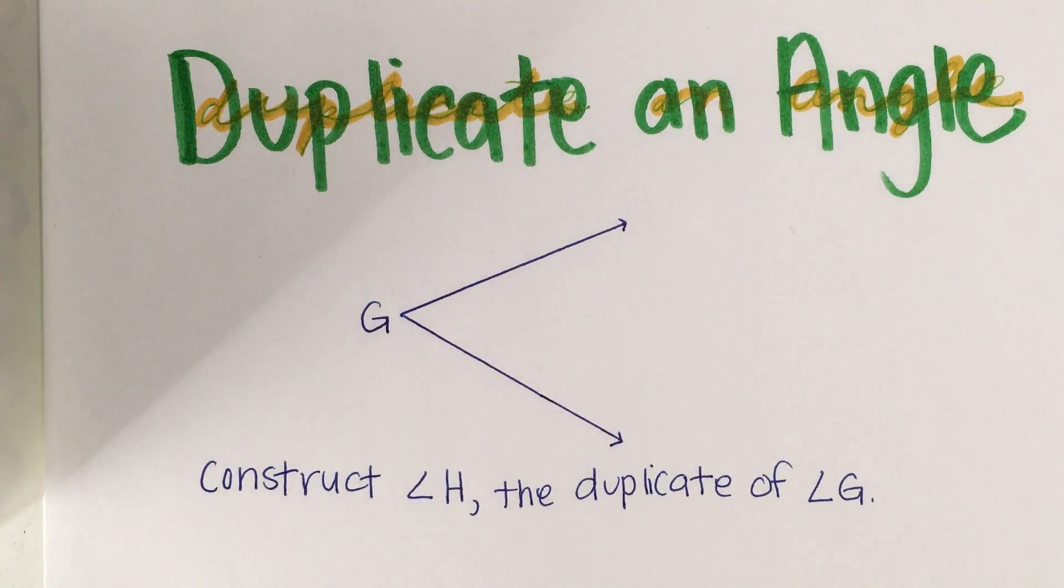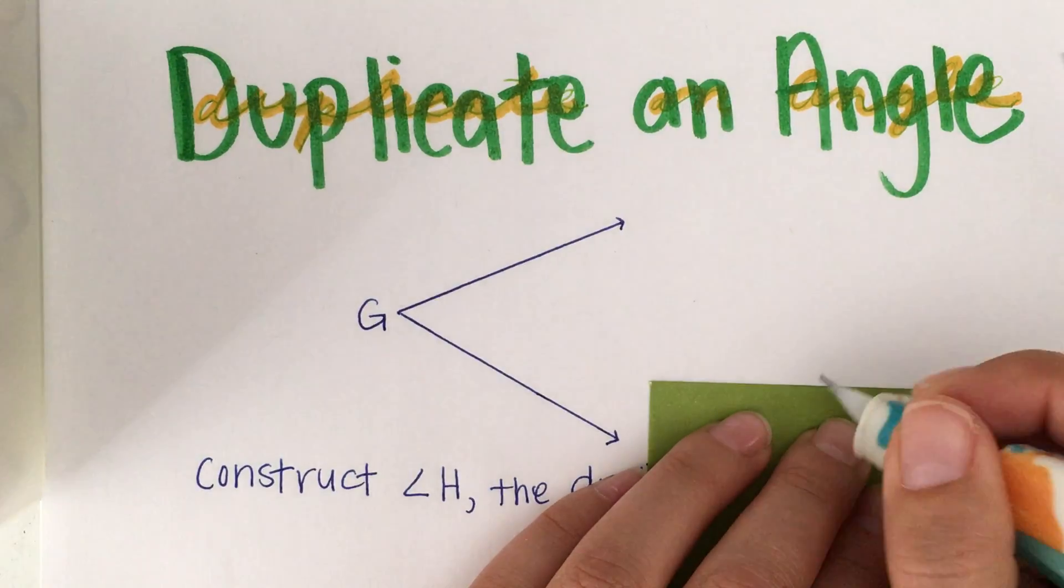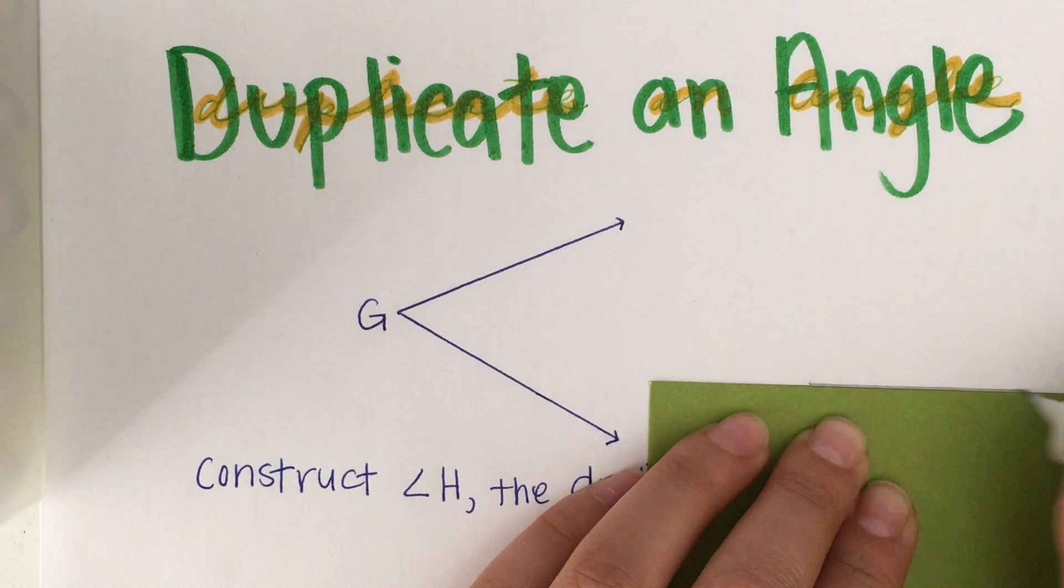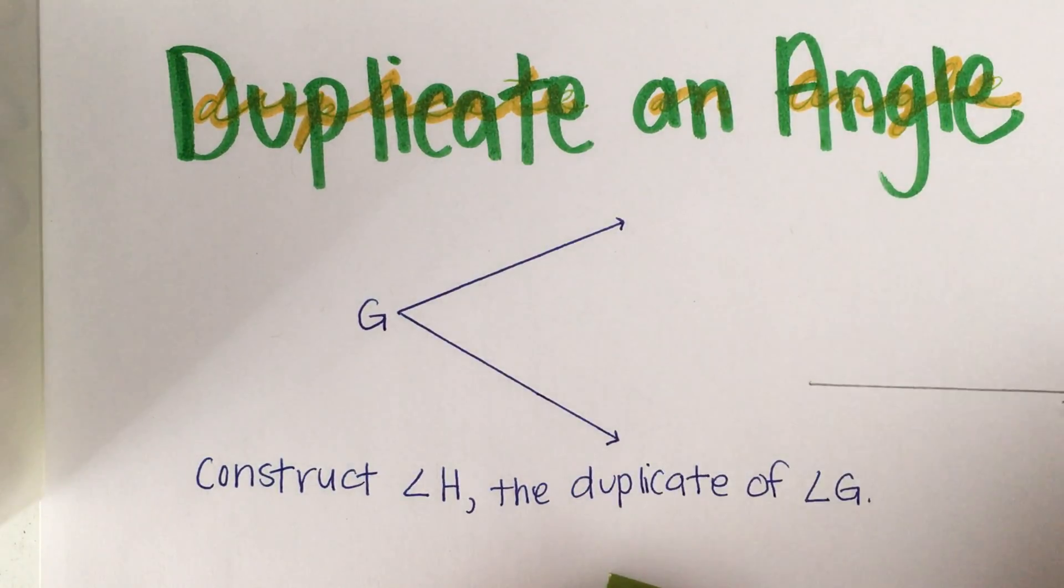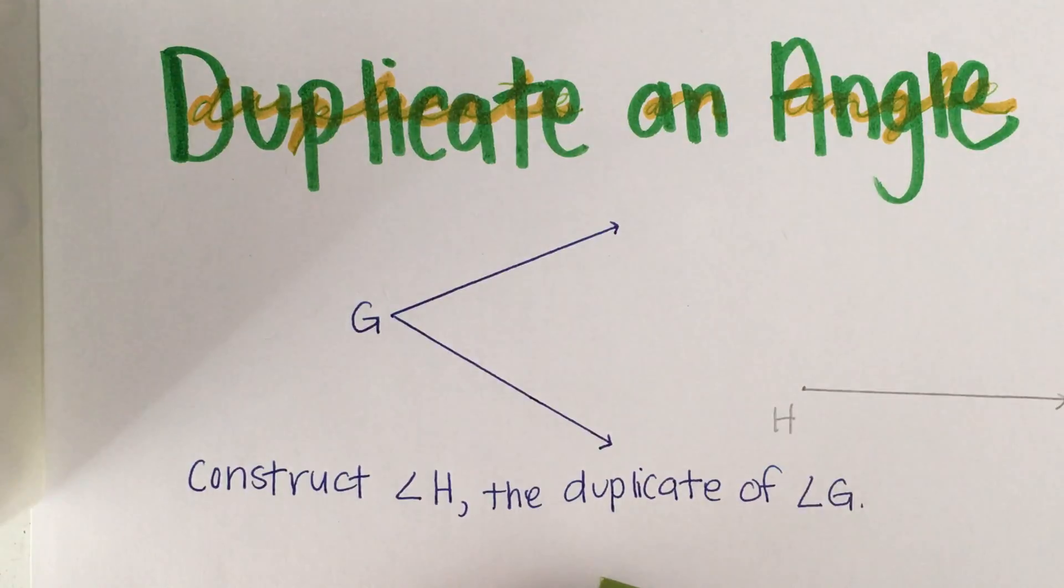The first step is to create one of the sides of the angle, so I'm just going to go ahead and draw a ray. At the beginning of the ray we are going to call that H. This is going to be the vertex of our new angle.